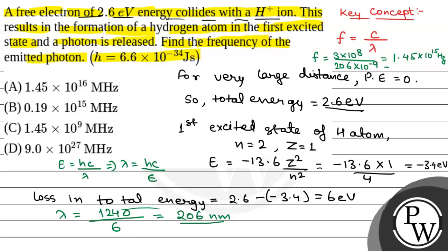If we change it to megahertz, it will be 1.45 into 10 to the power 9 megahertz. So the correct option will be option C. Hope you all understood it well. Best of luck.